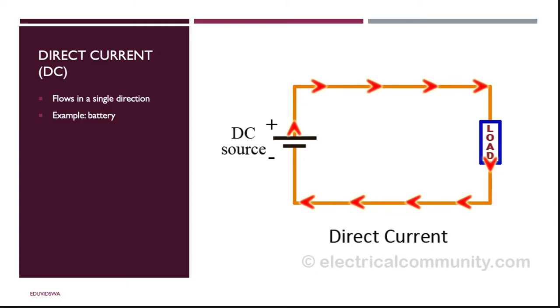Current is described either as direct current or alternating, depending on how electrons move. Direct current is where electrons flow in one direction. For example, in batteries, electrons flow from the negative to the positive side, never changing directions. In this diagram, you can see that current flows only in the right direction.